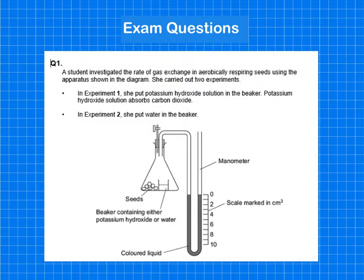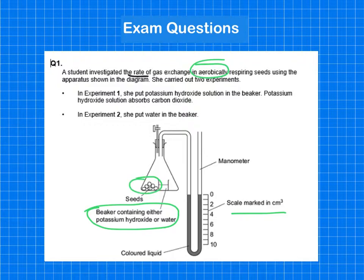Let's have a look at some exam questions on respirometers and respiration. These are quite applied questions. So firstly, a student investigated the rate of gas exchange in aerobically respiring seeds using the apparatus shown in the diagram. So in experiment one, she put potassium hydroxide solution in the beaker, whereas in experiment two, she put water in the beaker. So that's the only thing that was changed. And they've got a scale in the manometer. They've got the germinating seeds, sealed unit.